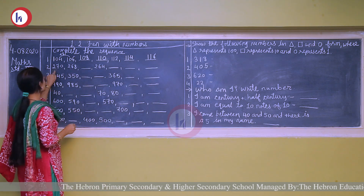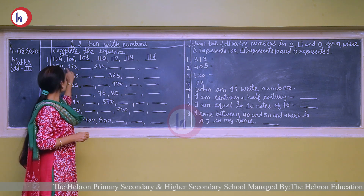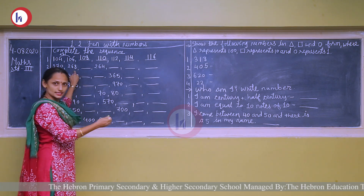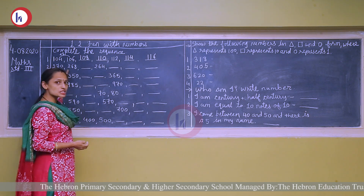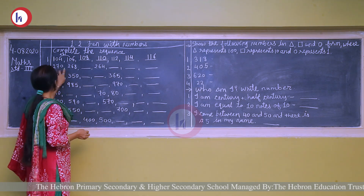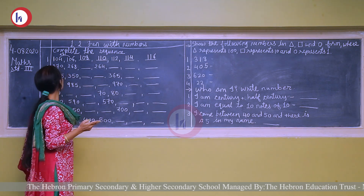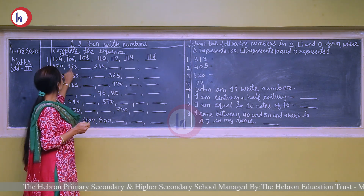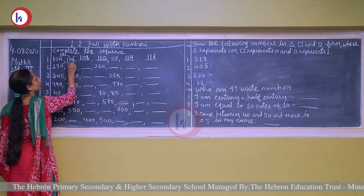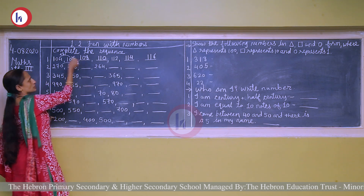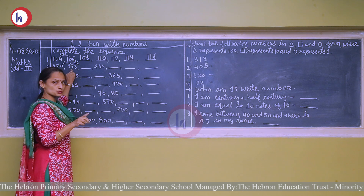Second number: 270 and 268. Here the number is decreasing, so it is a backward counting. We will find the difference between these two numbers. If we subtract 2 from 270, we get 268. So 268 minus 2 gives us the next number.